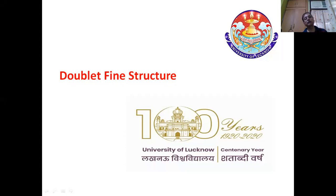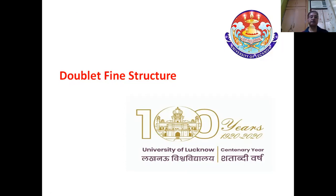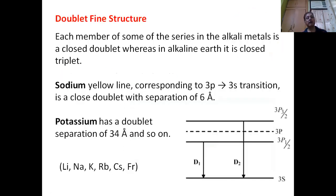The Bohr model or the Bohr-Sommerfeld model could not explain the doublet fine structure in alkali metals or alkali earth metals. The reason was simply that they had considered only the orbital motion of the electron and had not considered the spin motion. Each member of the series in alkali metal is a doublet. The sodium yellow line corresponding to the 3P to 3S transition is a doublet with separation of 6 angstroms. Similarly, potassium has a doublet separation of 34 angstroms, and each member of this group shows doublet fine structure.